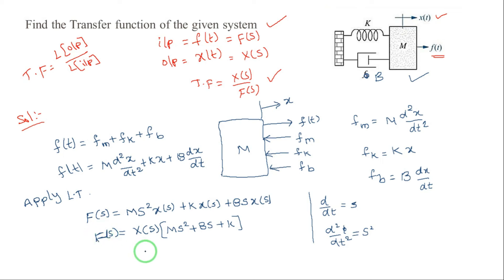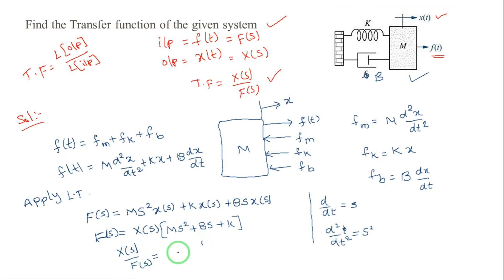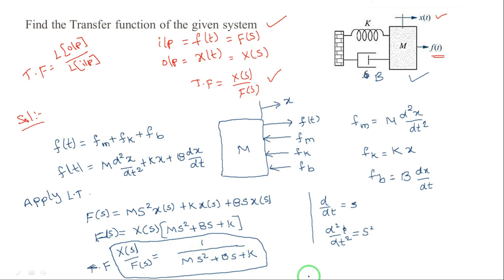The transfer function is X(s)/F(s). Therefore: X(s)/F(s) = 1 / (Ms² + Bs + K). This is the transfer function of the given system. This is the procedure to find the transfer function of a translational mechanical system.